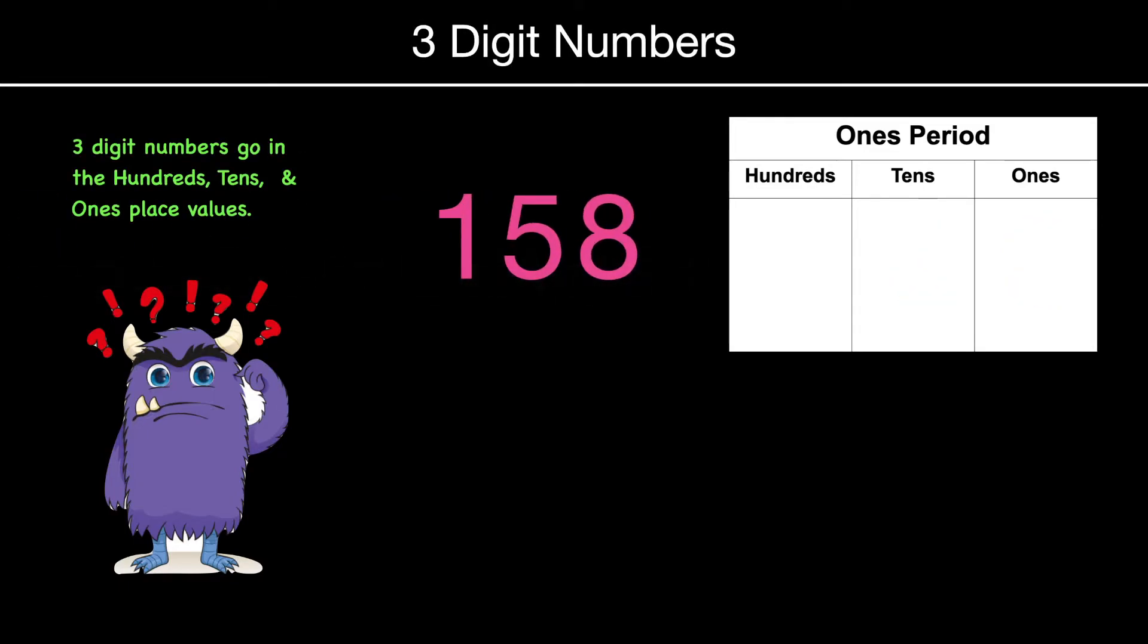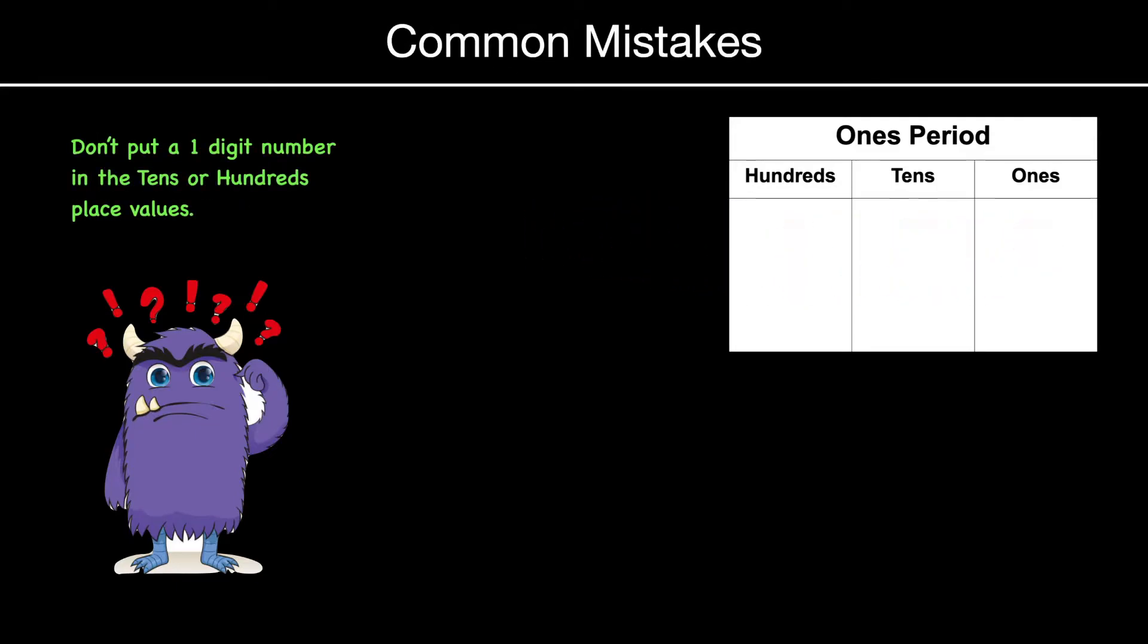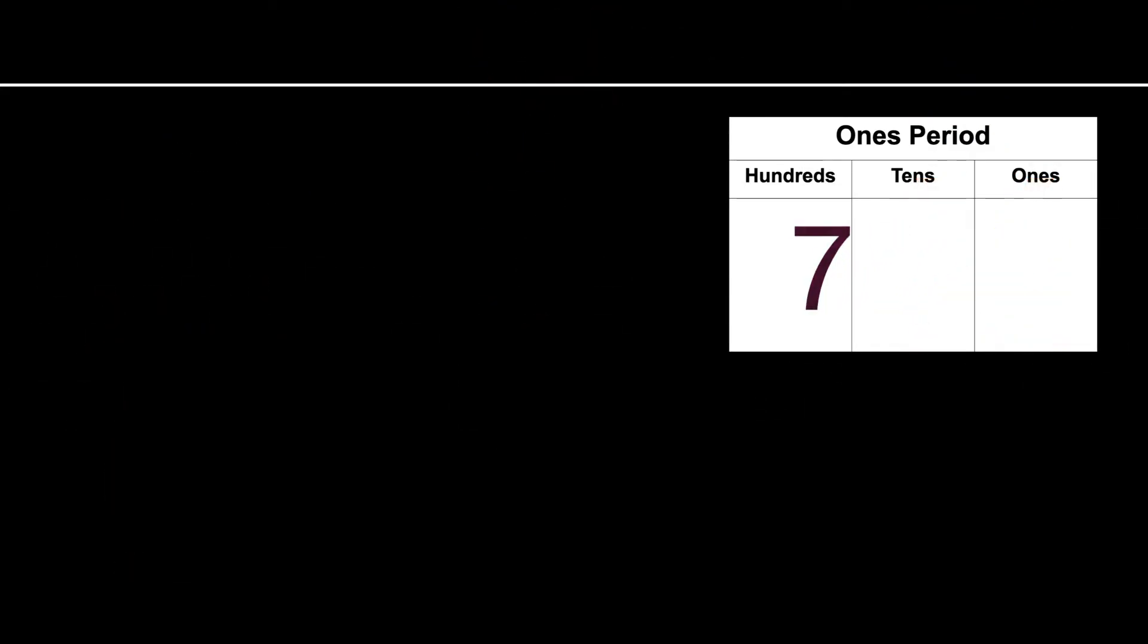Three digits, like 158, would be in the hundreds, tens, and ones place value. Now, be careful not to make the mistake of sometimes putting it in the wrong place value. For example, if you had seven and the teacher says, well, what place value is that? Don't accidentally say tens. The reason why is that seven tens is actually worth 70 and not seven. So be careful not to make that mistake.